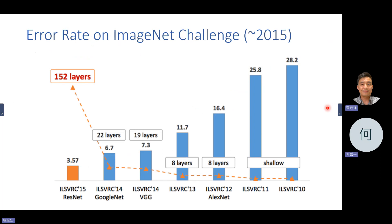Hinton's team successfully reduced the error rate by almost half — a significant breakthrough at that time. Their model had eight layers. After that, everybody started studying deep learning models.